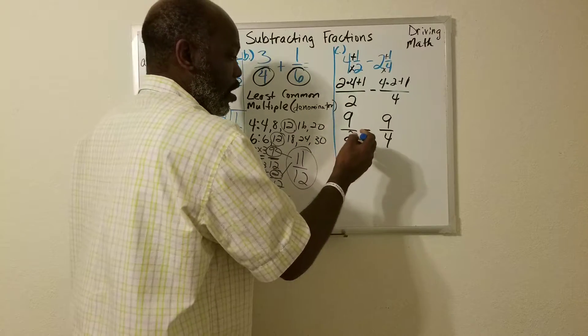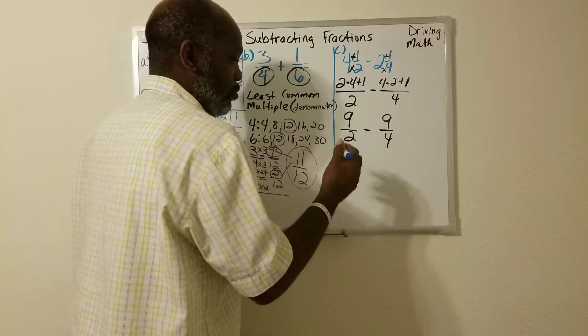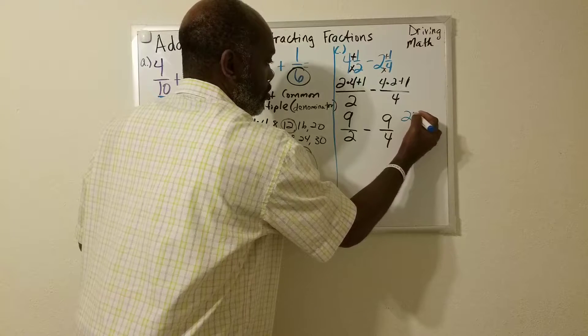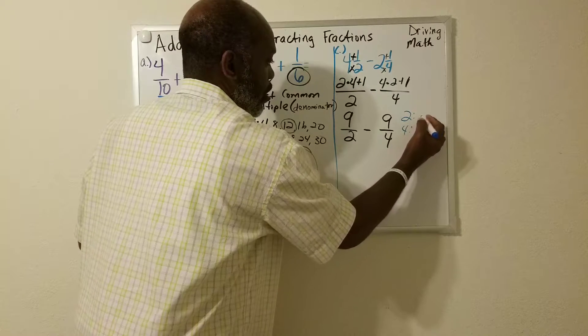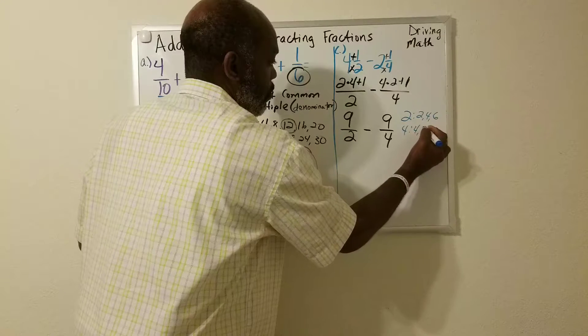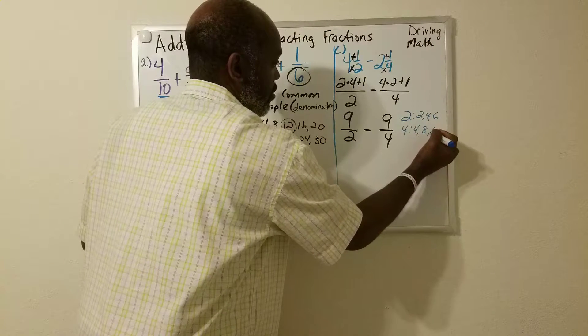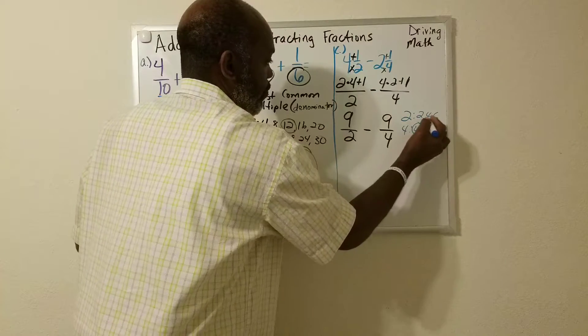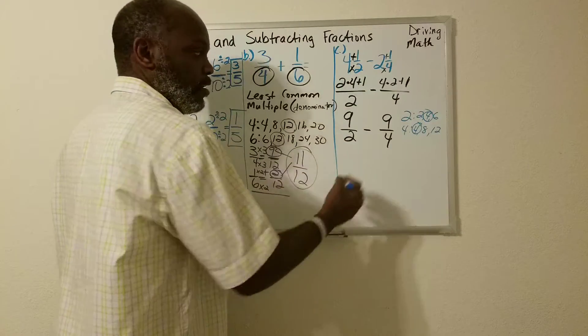Have to find the common multiple. We're looking at two, four. Don't have to go too far. Four, eight, 12. The common factor that's the smallest is four.